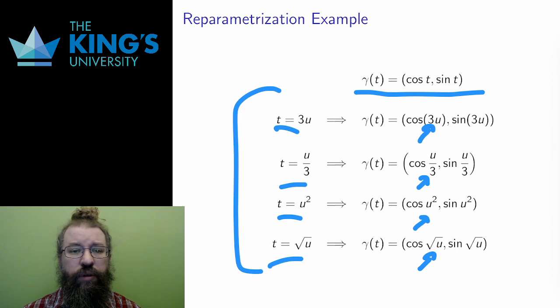But how different? 3u is going to move three times as fast. So then a full revolution will happen by the time u equals 2π over 3, instead of the original t equals 2π.